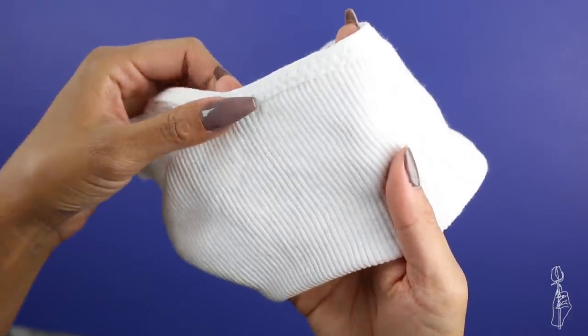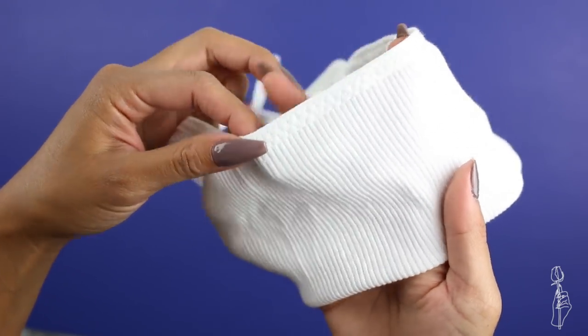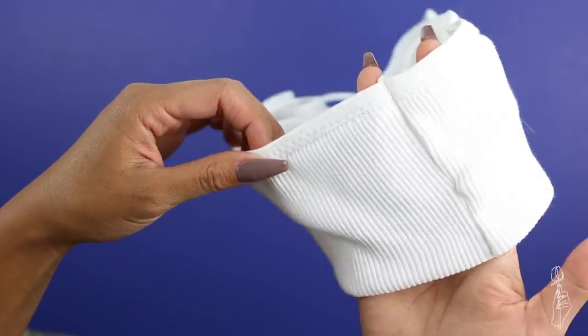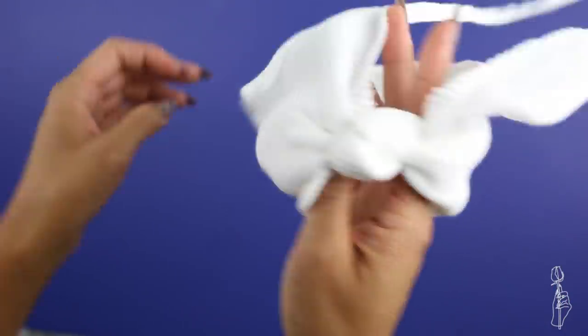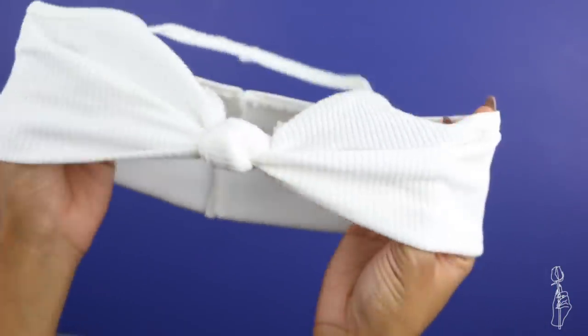Because the halter straps are not adjustable, it might be tight on some people, so if it is, when you're cutting around the armhole, just go a little bit past the bottom of the neckline so that you can make your straps longer.